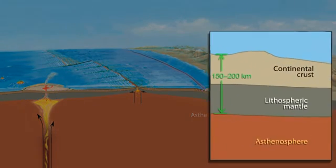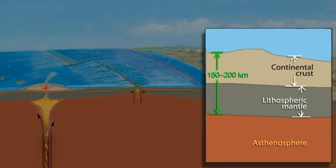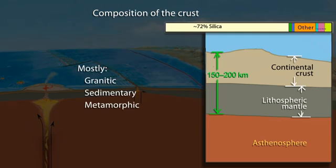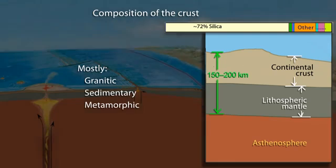Continental lithosphere with continental crust above the lithospheric mantle typically ranges from 150 to 200 kilometers thick. Continental crust stands above sea level because it has an average thickness of 40 kilometers and is mostly made of more buoyant, silica-rich, low-density granitic, sedimentary, and metamorphic rocks which form the continents.